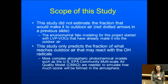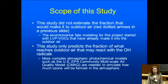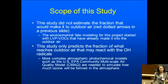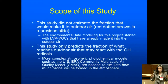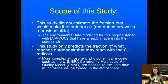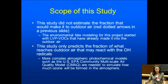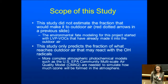We do not estimate the fraction that would make it to the outdoor air. We are assuming that the chemical already has made it to the outdoor. In order to determine what fraction makes it outdoor, one would need to develop several product-specific models for particular product types and different use patterns. We also do not follow through in an atmospheric model to determine if the chemicals form ozone. What we are doing is determining what fraction reaches outdoor air and has that initiating reaction with an OH radical. More complex atmospheric photochemical models, such as the U.S. EPA Community Multiscale Air Quality Model, are needed to simulate how much ozone would actually be formed.